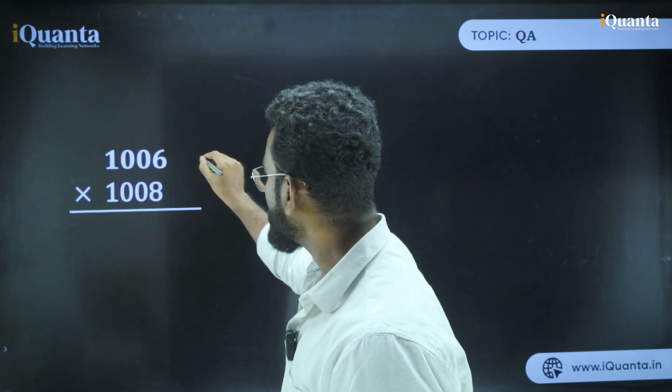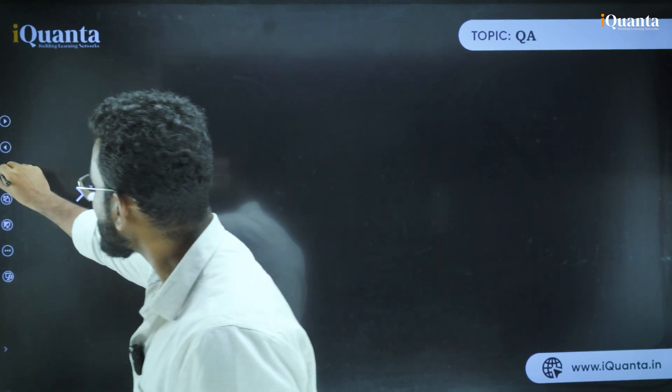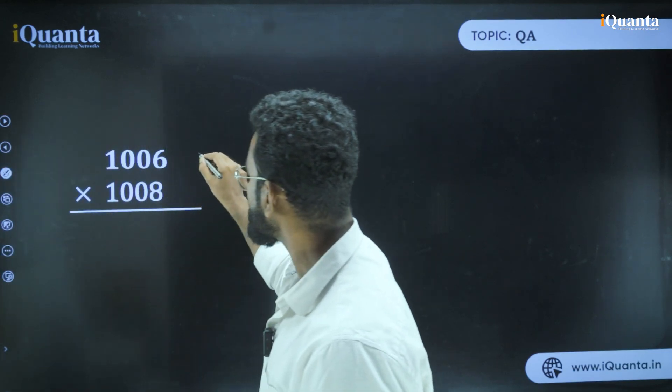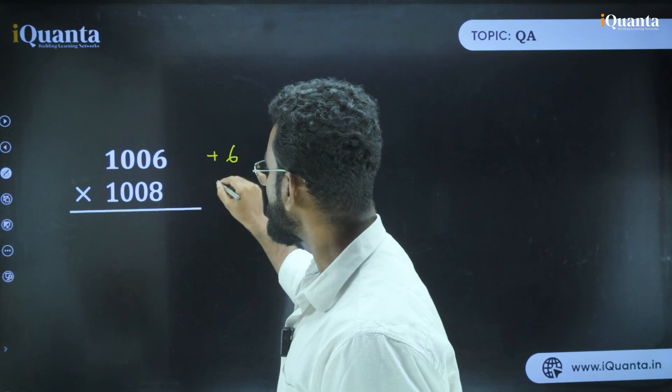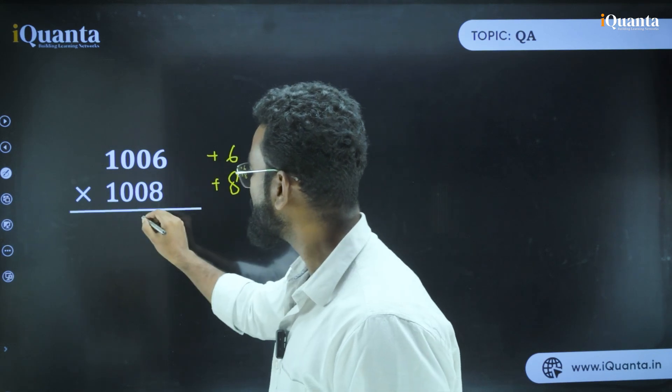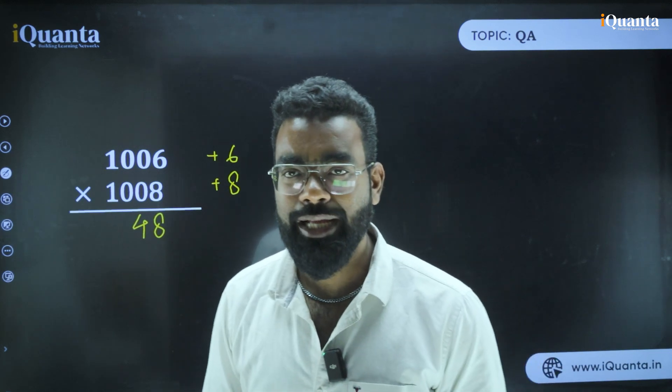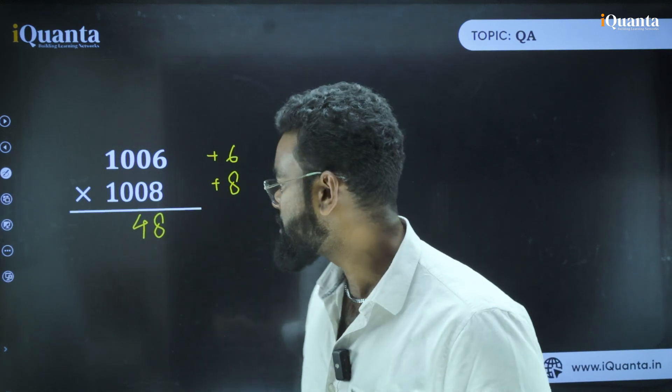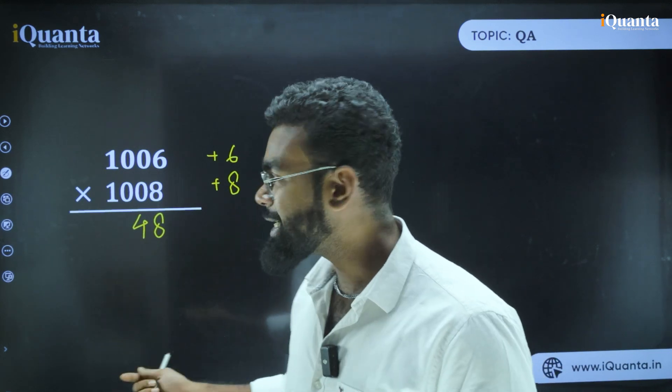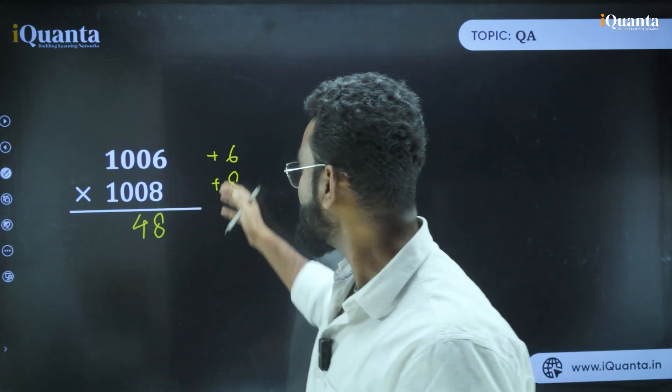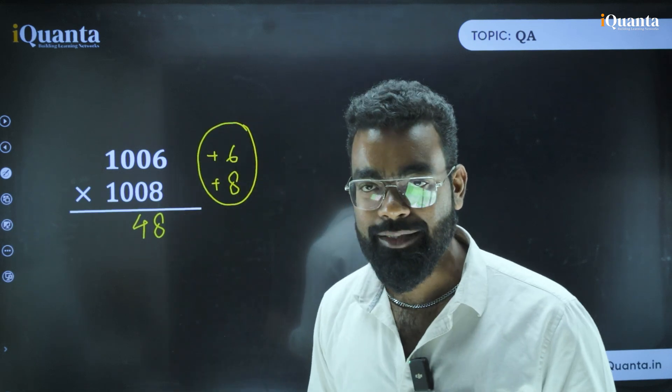In 100 what we have done is how much extra it is. The extra amount is plus 6 and plus 8. So what is 6 into 8? 48. In 100 base numbers, we just finished with 48. But in this case, it is a 1000 base number. So this thing is basically responsible for the last three digits.